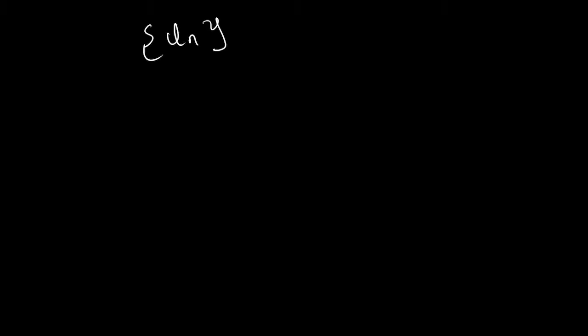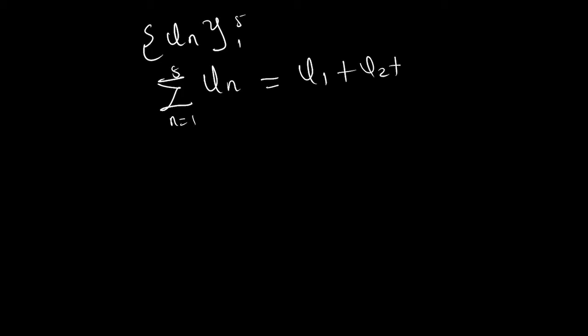In the series, just as a sequence can be written in a compact notation, we represent a series using the summation sign: the sum of u_n starting from maybe 1 to 5. If I want to list the terms it's going to be u1 + u2 + u3 + u4 + u5. So the sequence is just listing the terms while the series is adding the terms of the sequence.